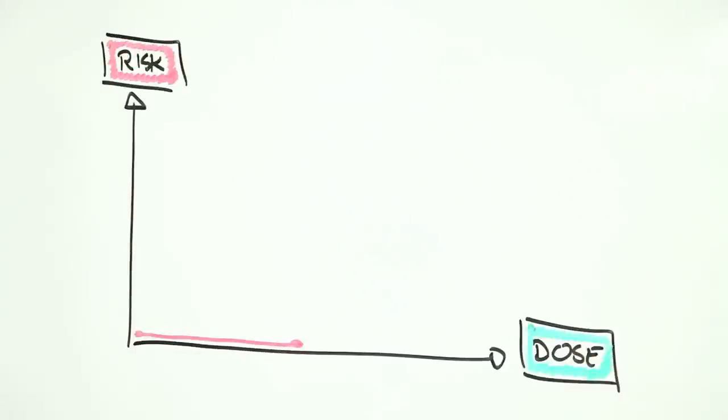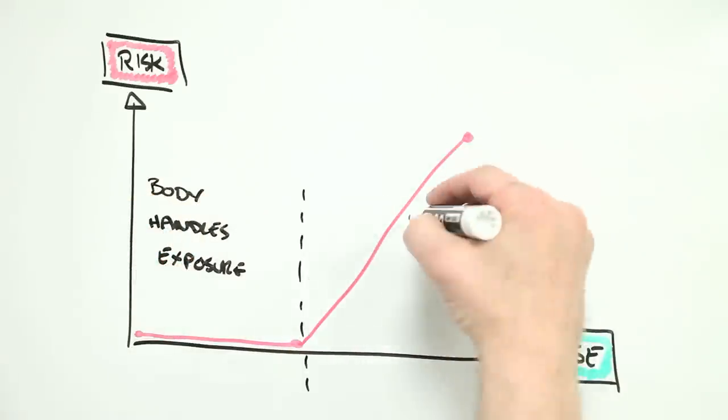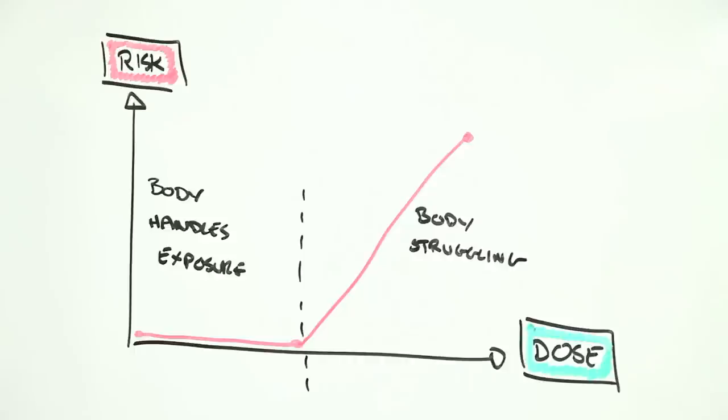At low doses, the body can handle the stuff, so you're exposed and there is negligible risk. But above a threshold dose, the body's defenses begin to struggle. An increasing dose leads to increasing risk.